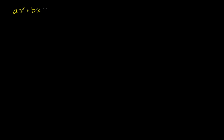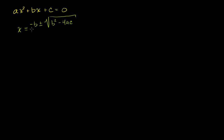In the last video, I told you that if you had a quadratic equation of the form ax squared plus bx plus c is equal to 0, you could use the quadratic formula to find the solutions to this equation. And the quadratic formula was x, the solutions, would be equal to negative b plus or minus the square root of b squared minus 4ac, all of that over 2a.